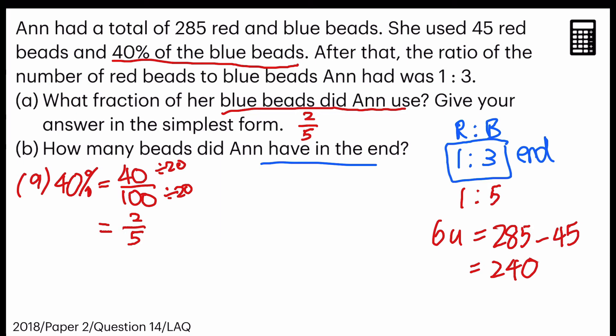So now, the question was, how many beads did Ann have in the end? Which is 1 plus 3 units, 4 units. So I'm going to find out there's 4 units. But first, I have to find out what's 1 unit, which is 240 divided by 6 equals to 40.